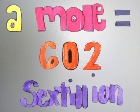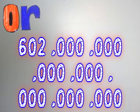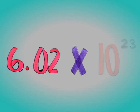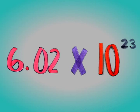A mole equals 602 sextillion, or 602 with 23 zeros afterwards. This is 6.02 times 10 to the 23rd.